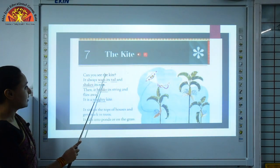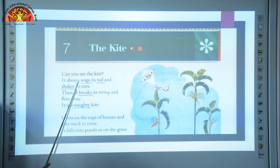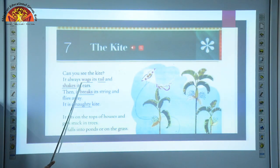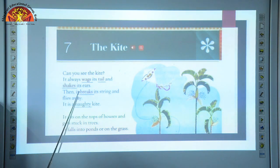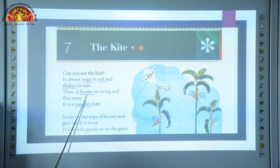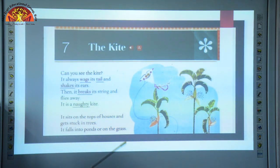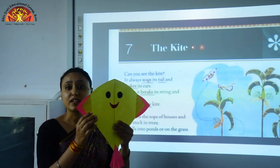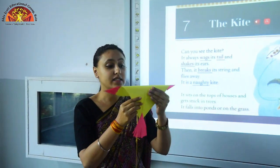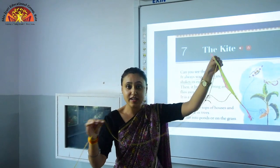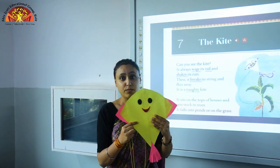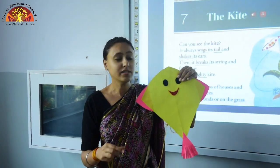Can you see the kite? Underline the word W-A-G-S, wags. T-A-I-L, tail. S-H-A-K-E-S, shakes. Then it breaks its string and flies away. Underline the word B-R-E-A-K-S, breaks. It is a naughty kite. Underline the word N-A-U-G-H-T-Y, naughty. So we will read it again: Can you see the kite? It always wags its tail and shakes it here. Then it breaks its string and flies away. It is a naughty kite. Why is it naughty? Because it breaks its string, okay children?